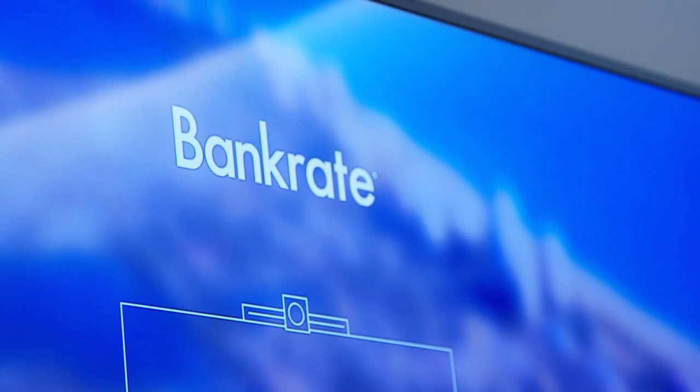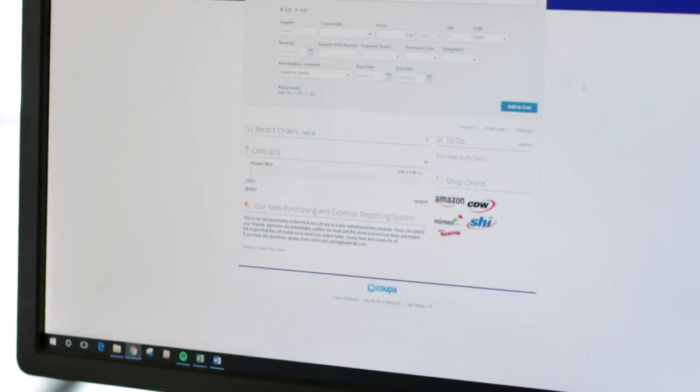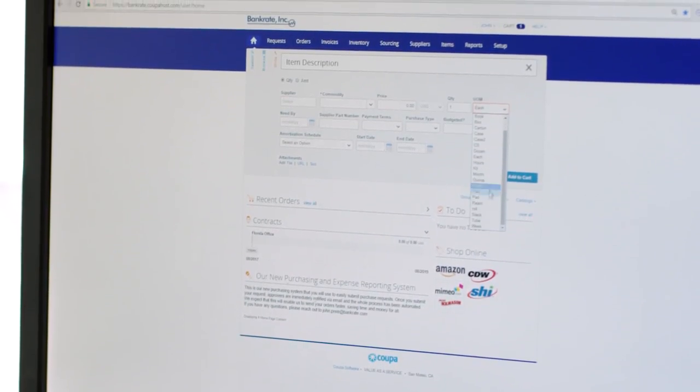We're trying to get our suppliers into the Coupa supplier network and have them process the invoices. It gives them visibility as to where they are in the overall process of where their invoice is being paid. They get notifications when they have a PO created, they have a notification when the invoice is approved, and they have a notification when they get paid. This is all accessible where they log in and they can see exactly what has transpired between them and Bankrate.